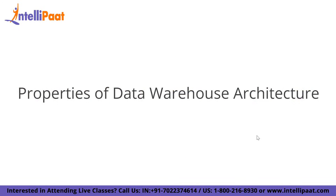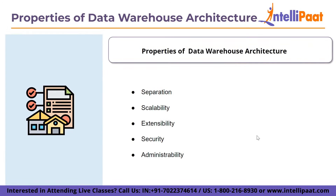The properties of data warehouse architecture are: first, separation — analytical and transactional operations should be kept separate as much as feasible; second, scalability — hardware and software architectures should be easy to upgrade as user requirements and data volumes grow; third, extensibility — the architecture must adapt to new functions and technology without a complete overhaul; fourth, security — access to strategic data must be monitored; and fifth, administrability — managing a data warehouse should not be difficult.